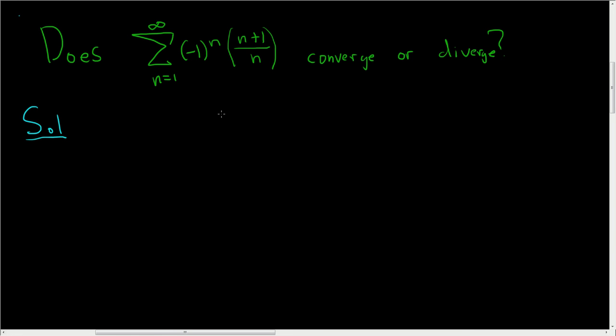Now this is an alternating series, so it is tempting to use the alternating series test. If you try to use the alternating series test though, it will fail. Why?